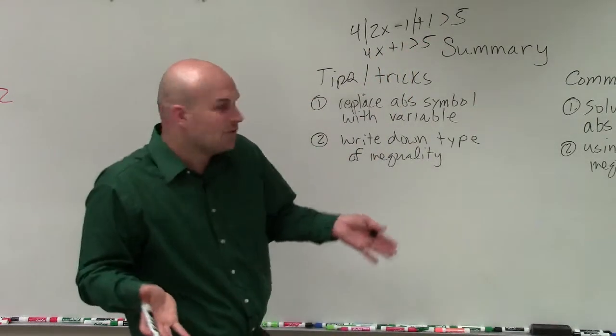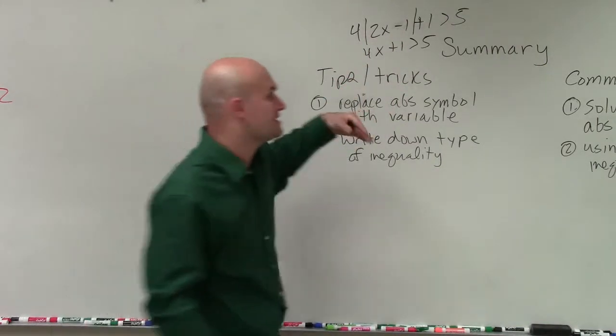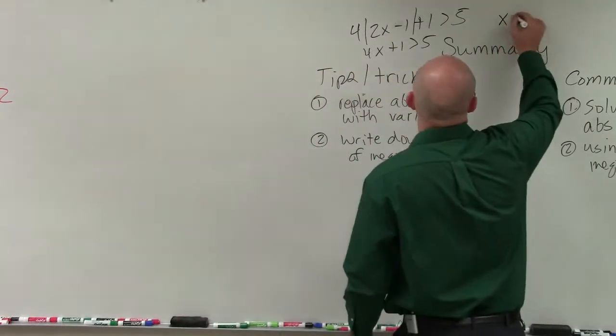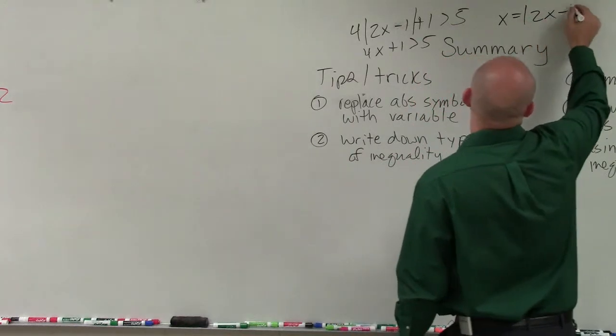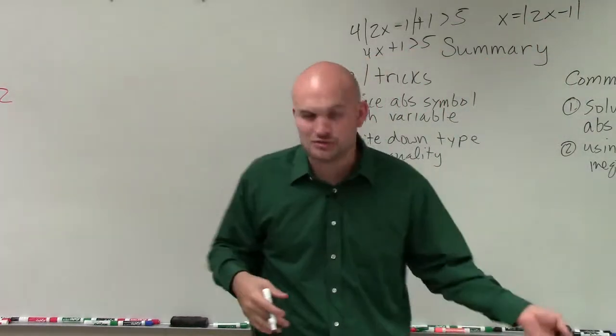Just say 4x, and then solve for it, because we need to get that absolute value of 2x minus 1 isolated. Just remember, once you solve for x, that x equals the absolute value of 2x minus 1. So you've got to plug that in so you can create your two cases.